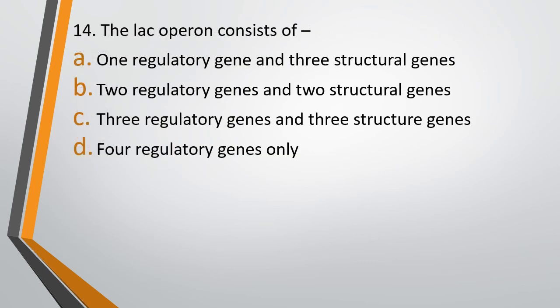Question number 14. The lac operon consists of: Option A, one regulatory gene and three structural genes; Option B, two regulatory genes and two structural genes; Option C, three regulatory genes and three structural genes; Option D, four regulatory genes only. The correct answer is Option A — it consists of one regulatory gene and three structural genes.